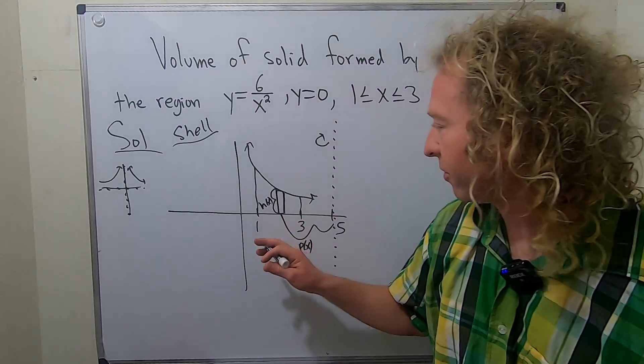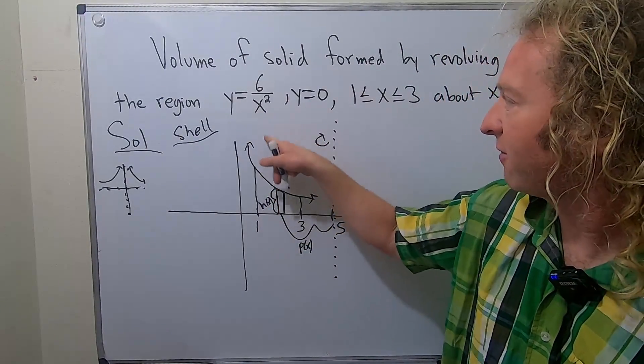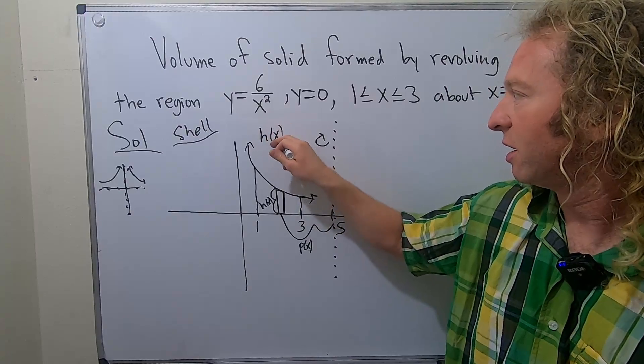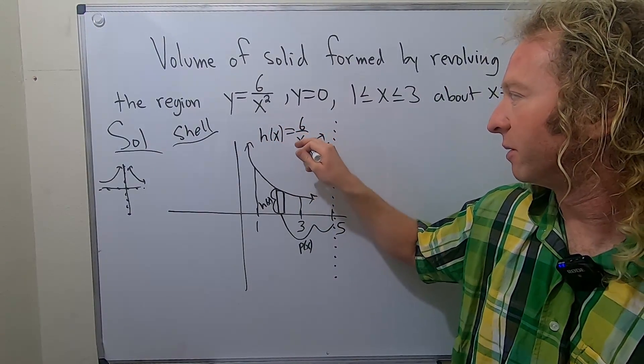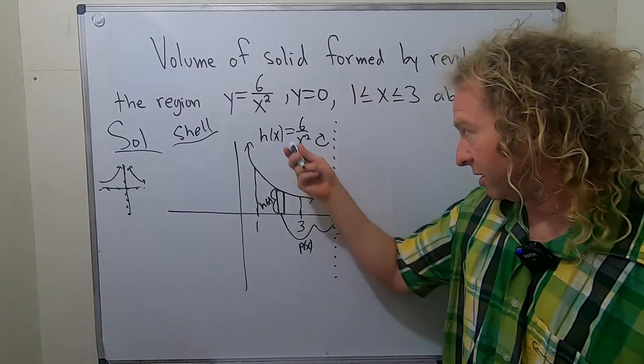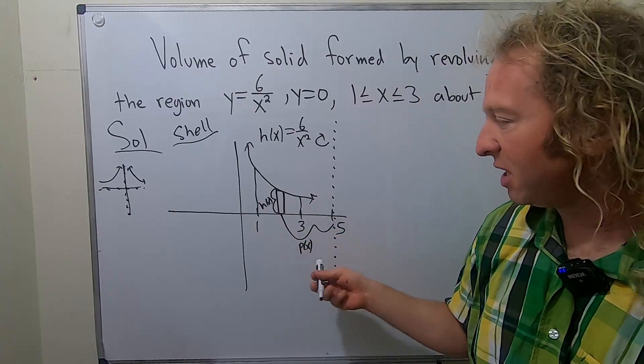Okay, so now we can figure out what everything is. So first of all, h of x is easy because this graph here is six over x squared. So h of x is going to be six over x squared. Always in this case. And then what's p of x?